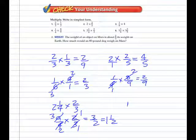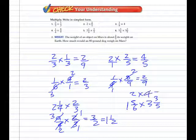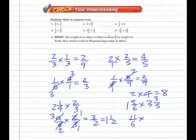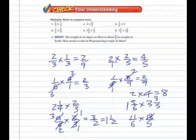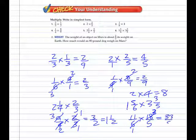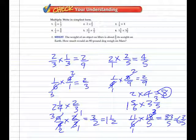Number six: one and five-sixths times three and three-fifths. Our estimate would be about two times four, or about eight. One and five-sixths: six times one is six, plus five is eleven-sixths. Three and three-fifths: five times three is fifteen, plus three is eighteen-fifths. Simplify by dividing by six — that gives me three here and one here. Thirty-three over five, which is six and three-fifths. Reasonably close to the estimate.